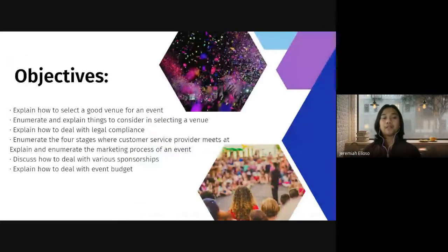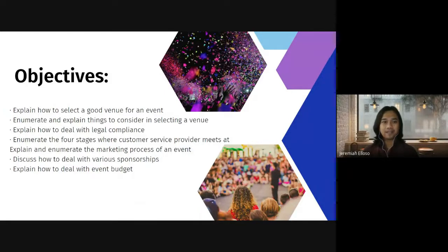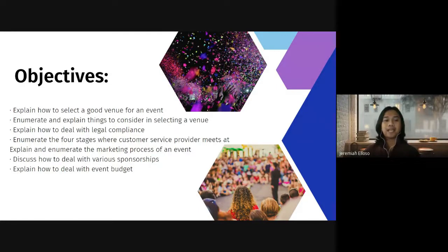First is to explain how to select a good venue for an event; enumerate and explain things to consider in selecting a venue; explain how to deal with legal compliance; enumerate the four stages where customer and service provider meet; explain and enumerate the marketing process of an event; discuss how to deal with various sponsorships; and explain how to deal with event budgets. Let us get started.